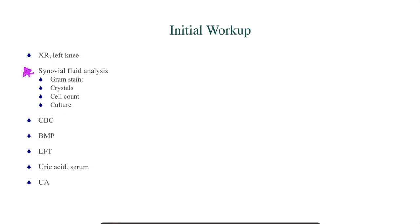Fortunately, when you type in synovial fluid, you'll see gram stain, crystal, cell count, and culture, and you're just going to order all of those. We'll get basic routine labs: CBC, BMP — we really want to check renal function in a patient with suspected gout — liver function tests, serum uric acid, and urinalysis. Some of these are going to be important for pseudogout as well, but that synovial fluid analysis is really going to tell us what kind of arthritis this is.